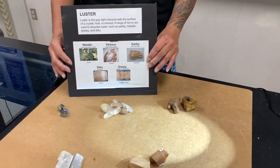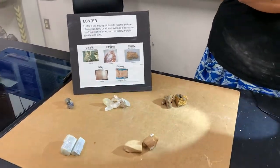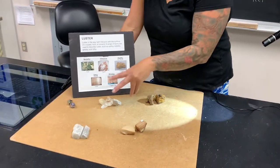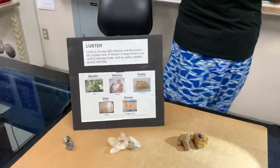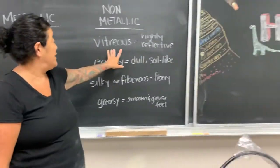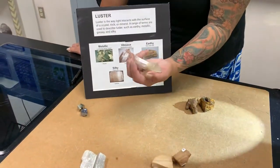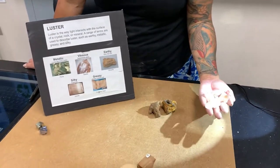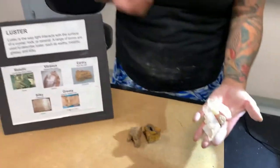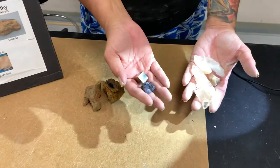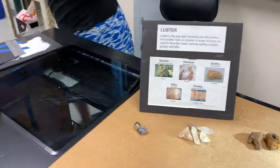The next ones are all non-metallic lusters. This is the one that stops everybody up — the term vitreous. On the chalkboard you'll see that the definition for vitreous just means it's highly reflective or glassy. I have some quartz crystals here and you can see that they're very reflective — really shiny, with light just bouncing off of them. People tend to mistake the look with metallic, especially if you have a black mineral that is actually not metallic — it's actually vitreous.